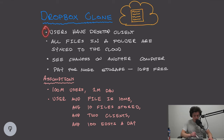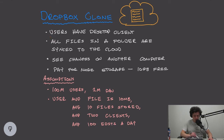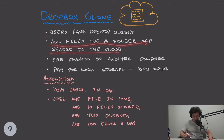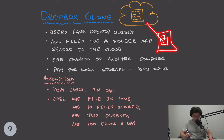The first requirement is that users have a desktop client. This desktop client makes the second requirement possible: all files in the folder are synced to the cloud. Our user has a machine — we'll designate this box as their machine — and there's a folder inside that will automatically upload to our Dropbox clone service.